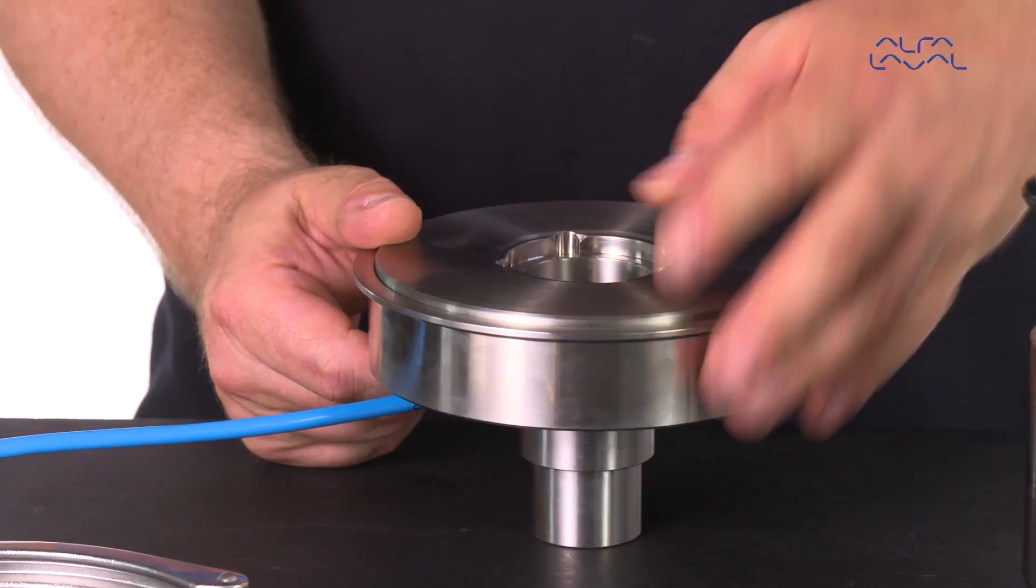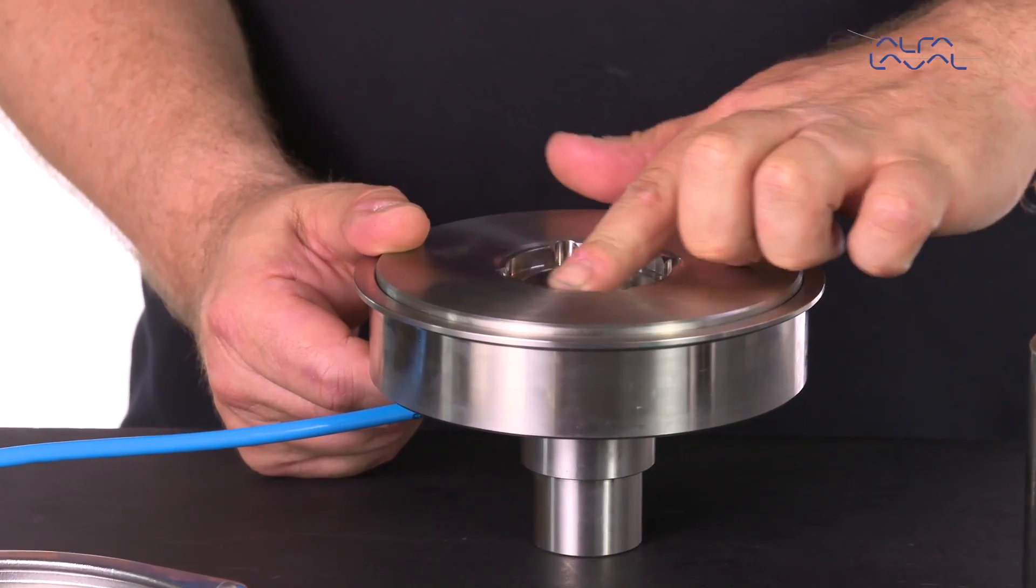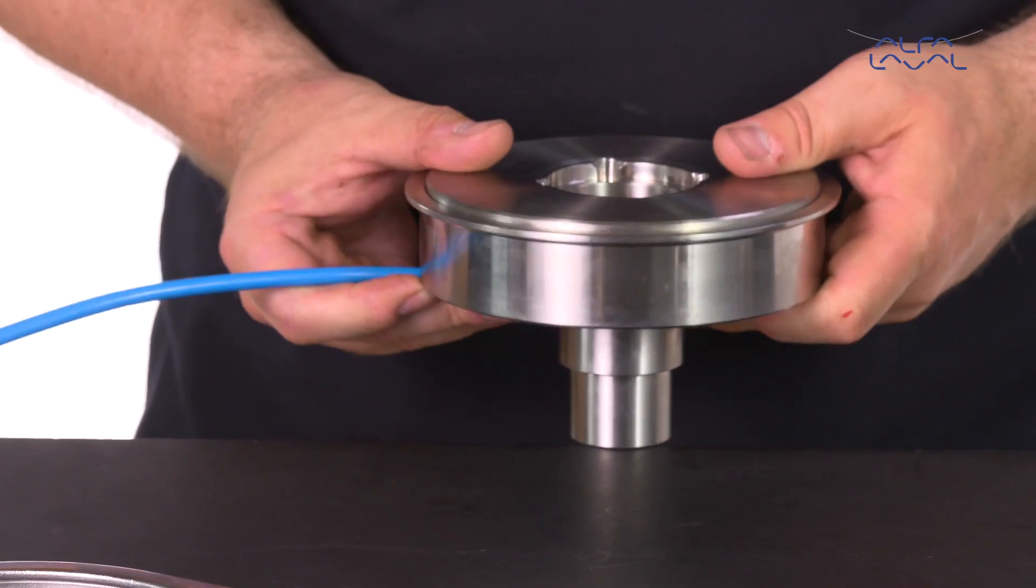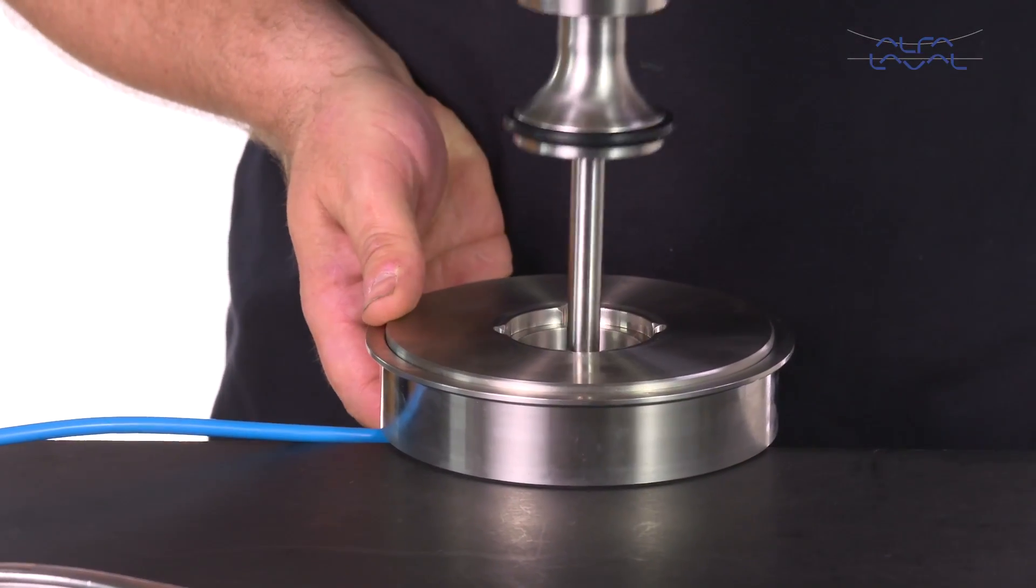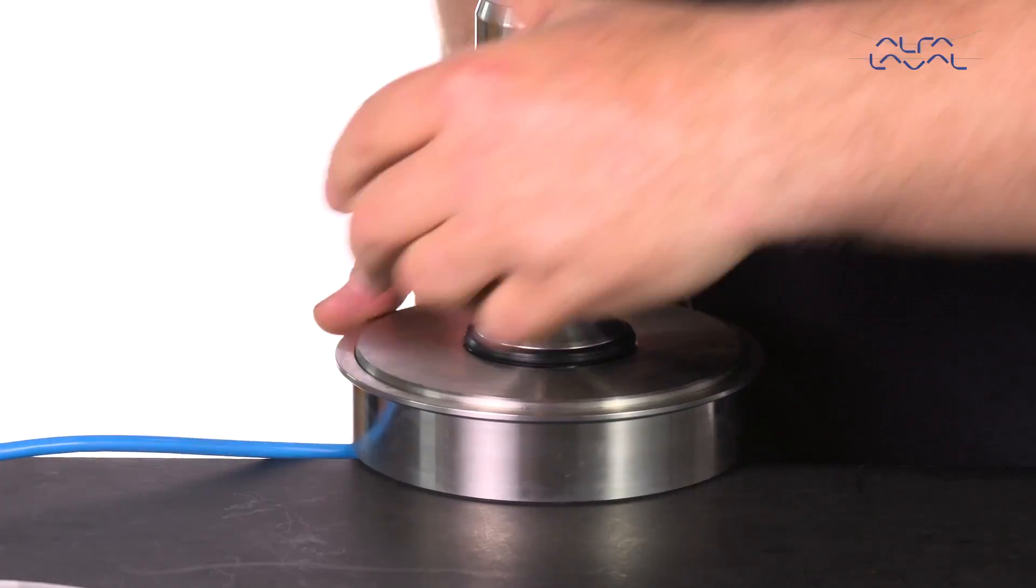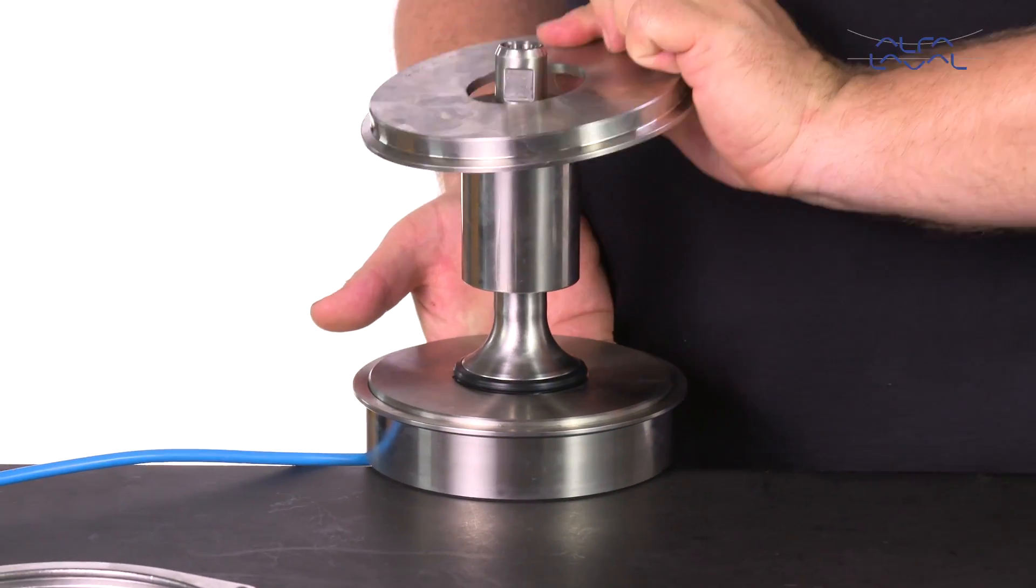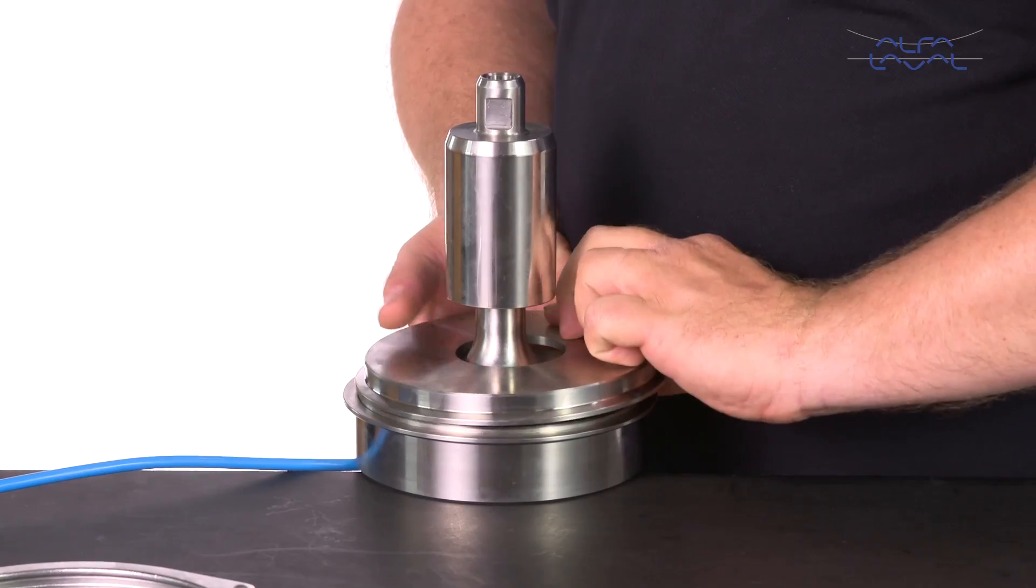Take the special tool for the radial seal. Inspect the tool opening for sharp edges. Place the lower plug with seal into the tool opening. Then put the tool cover on and secure it by tightening the clamp ring.